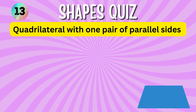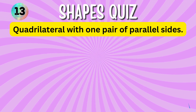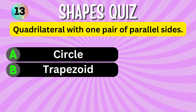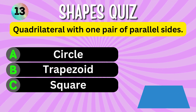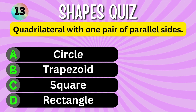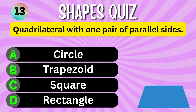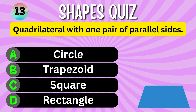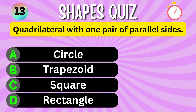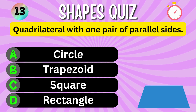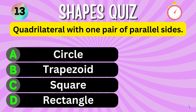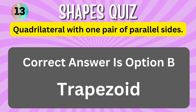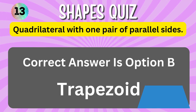Quadrilateral with one pair of parallel sides. Option A. Option B. Option C. Option D. You have 5 seconds to choose the correct answer. Your time starts now. The correct answer is Option B, Trapezoid.